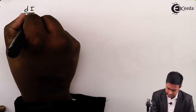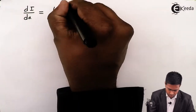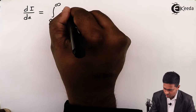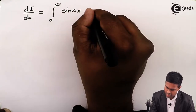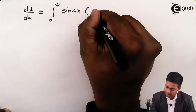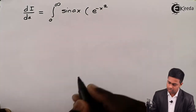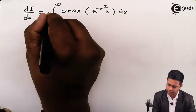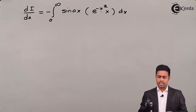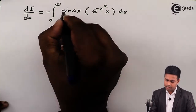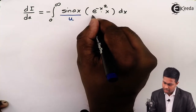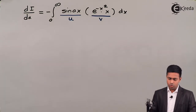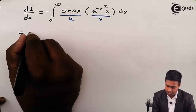dI/da is equal to the integral from 0 to infinity of sin(ax) — and the second term I consider as e raised to minus x squared into x dx, keeping the negative sign outside the integration. I have written all three terms, considering the first term as u and the second term as v, and now we'll find the integration using the IBP property.